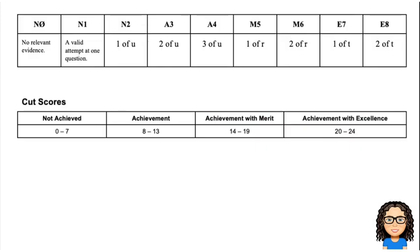That takes us to the end of question three. So then you can go through and mark that. One U gets you N2, two U's, A3, three U's, A4. If you have one R, M5, two R's, M6, one E, E7, or two E's, is E8.